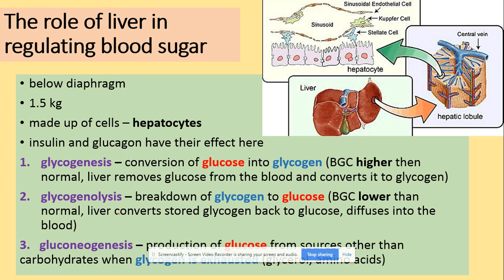Glycogenolysis, which we covered in the second messenger model, is used when blood glucose concentration is lower than normal because it breaks down glycogen into glucose, which then diffuses into the blood. Finally, gluconeogenesis is the process that produces glucose from non-carbohydrate sources such as glycerol or amino acids. This occurs when glycogen stores are all used up.